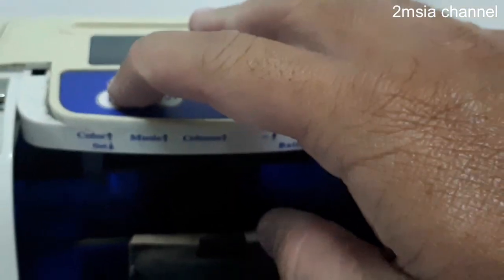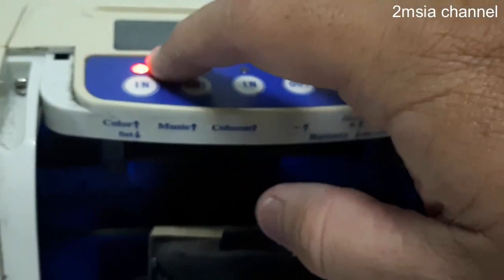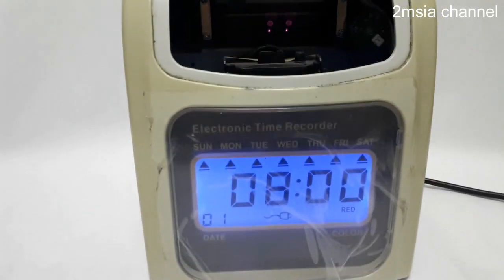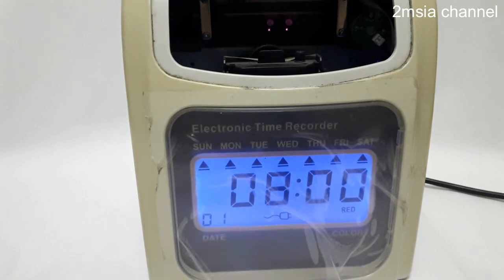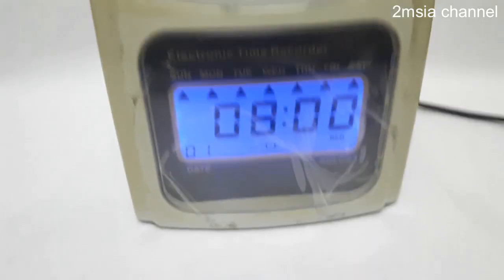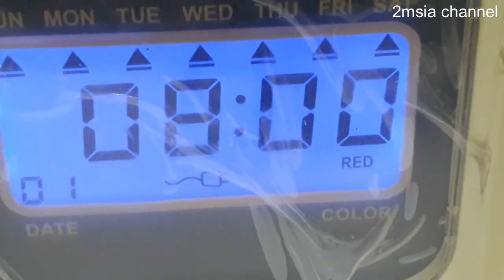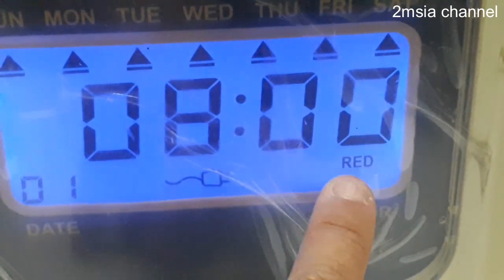So now it's blinking with no light over here. You just press this color button, so the light will light up. After that, you automatically can go into the color system. You can see it, it's automatically got the red color over here.